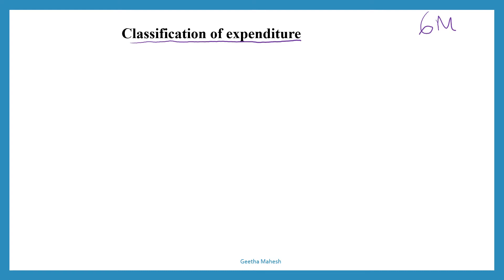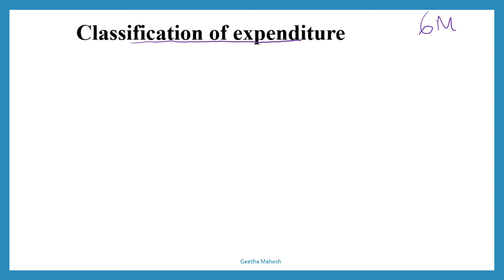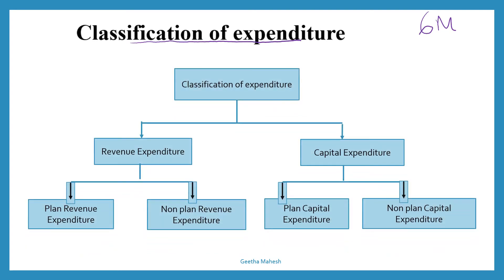As we have already seen in the government budget, there are two types of classification of expenditure. Classification of expenditure has two components: one is revenue expenditure, another one is capital expenditure. Revenue expenditure is further divided into planned and non-planned revenue expenditure. Capital expenditure is similarly divided into planned and non-planned capital expenditure.